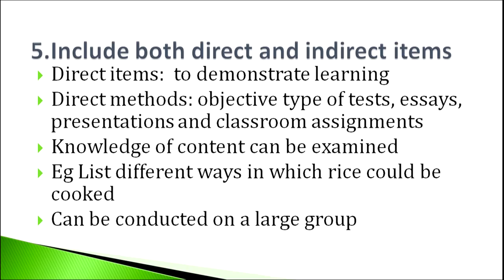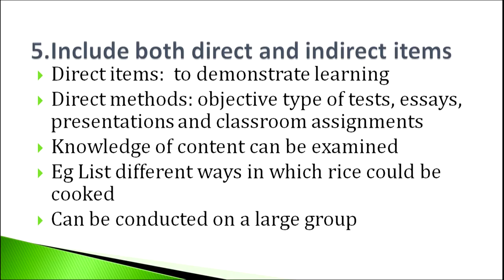A good assessment tool should include both direct and indirect items. Direct items demonstrate learning — direct methods include objective type tests, essay tests, presentations, or classroom assignments. These items test knowledge and content, and are generally based on information. For example: 'List different ways in which rice should be cooked.' This is a direct item where children respond from memory. Direct questions are also important because they can be conducted with a large group — if you have to assess 5,000 or 1 lakh students, direct questions are generally asked.